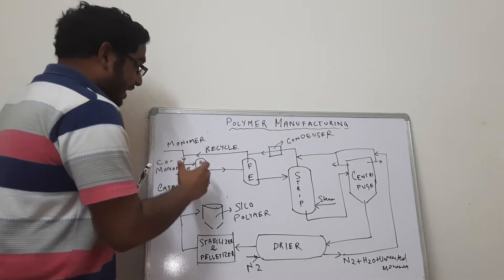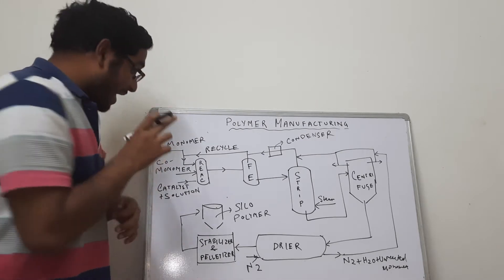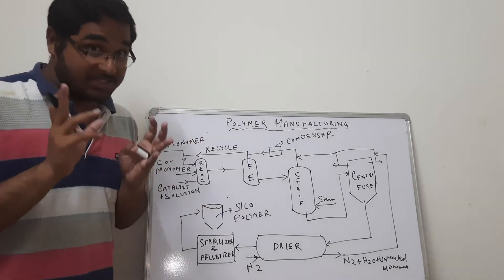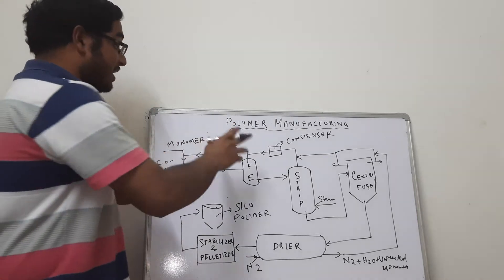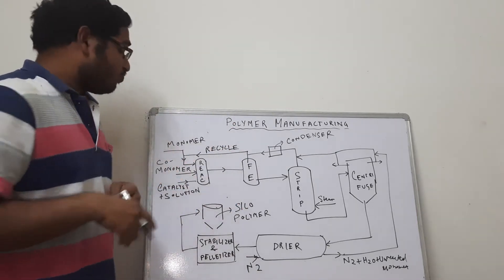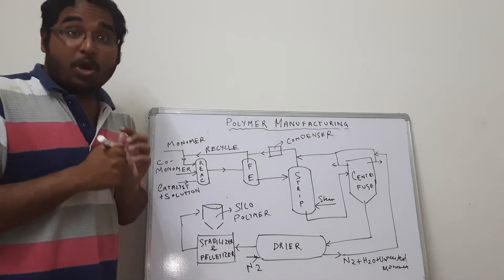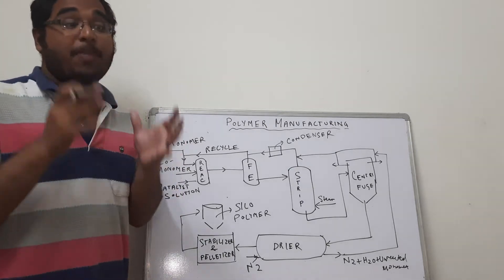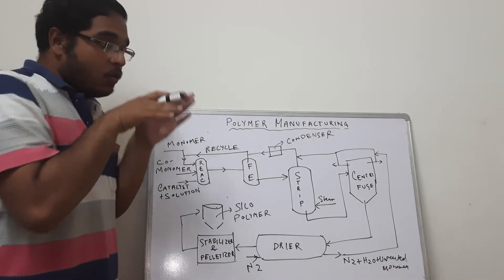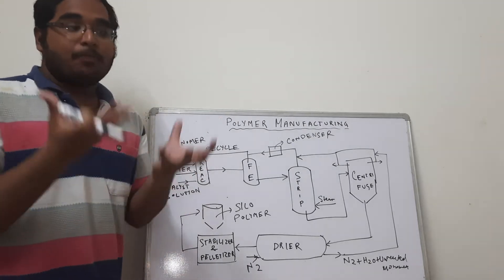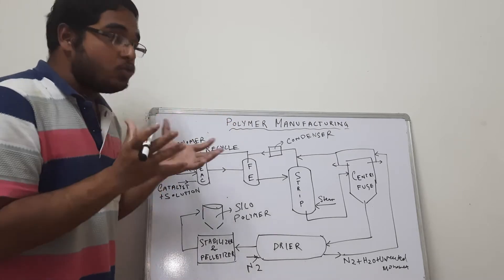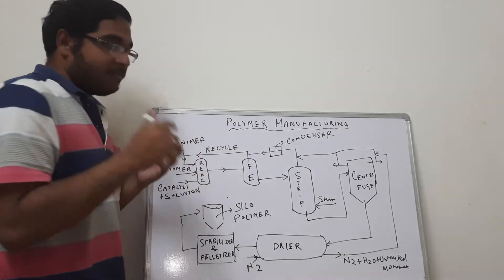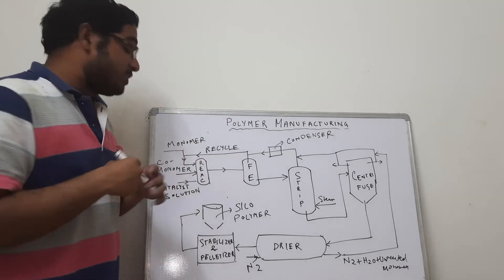In the reactor itself, the monomer, co-monomer, catalyst, and solution are fed if it is a solution polymerization. If it is not solution polymerization, then only the catalyst, monomer, and co-monomer are fed, along with the recycle stream of recovered monomer. We have a video on bulk polymerization versus solution polymerization — please refer to that. In solution polymerization, the polymer and monomer are borne by a solution which carries away the heat of polymerization and maintains fluidity of the polymer mixture.